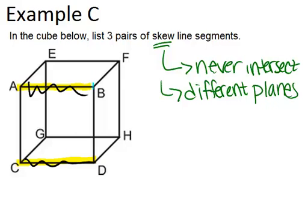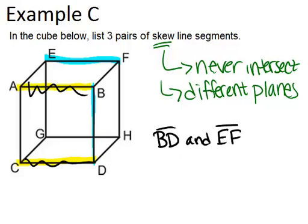We could do line segment BD, which would be skew with line segment EF. That would be one example. So BD and EF would be skew line segments.